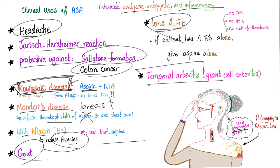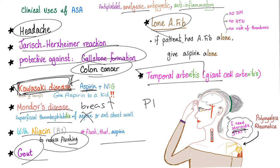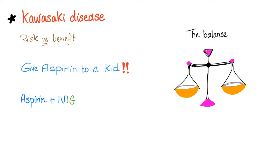Do you know what happens when you give steroids and aspirin to the same patient? They have a higher risk of peptic ulcer disease, because cyclooxygenase is now inhibited. So if you have to use both steroids and aspirin in the same patient, please protect the stomach from acids by adding proton pump inhibitors.